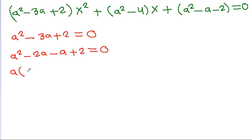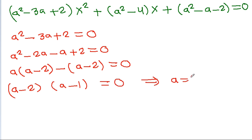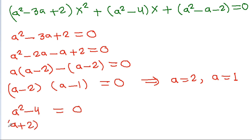We can factor a² - 3a + 2 = 0 as (a - 2)(a - 1) = 0, giving a = 2 and a = 1. For a² - 4 = 0, it factors as (a + 2)(a - 2) = 0, giving a = 2 and a = -2.